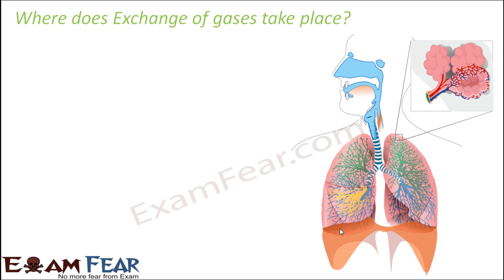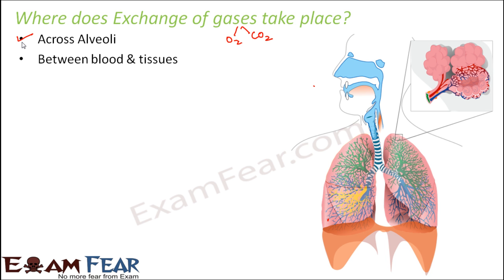So now the question is, where does exchange of gases occur? Whenever I say gases, I actually mean oxygen and carbon dioxide. Until now we talked about breathing — we saw how oxygen-rich air enters our body and reaches the alveoli, and how carbon dioxide-rich air comes out from alveoli to outside. Now the question is how carbon dioxide comes to the alveoli and how oxygen moves from alveoli to different cells of the body — that is what we will see now.